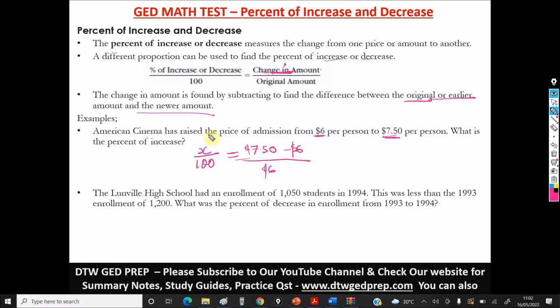So here, we have to resolve this. So what would this give us? Let me just come down here. We have X over 100. This minus this, that would give us $1.50 over $6.00. So we cross-multiply.